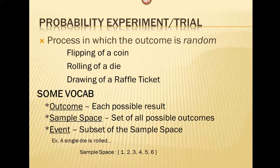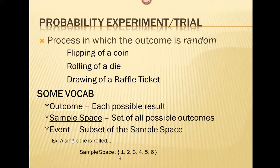If I'm flipping a coin, the sample space consists of heads or tails — a collection of every possible result. The event, if I've voted for heads, is just heads — that's the subset of my overall sample space. If we roll a die, our sample space would be the outcomes {1, 2, 3, 4, 5, 6}. When we put those outcomes into a set, we use brackets on either side — these brackets denote sets, which are just collections of numbers where order is not really important. If my event is rolling an odd number, the collection of outcomes comprising that event would be {1, 3, 5}.